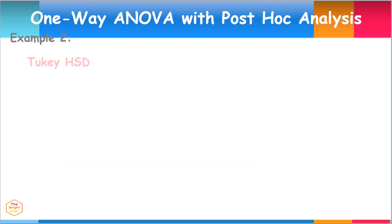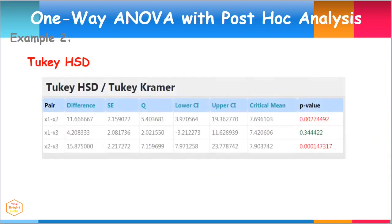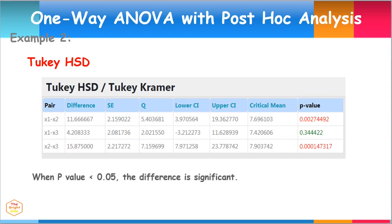Here is the result of the test using the Tukey HSD, which means Honestly Significant Difference. The same decision rule applies: when the P value is less than 0.05, the difference between the means is significant. Notice that the difference is significant in the X1-X2 pair and the X2-X3 pair, since both of their P values are less than 0.05.